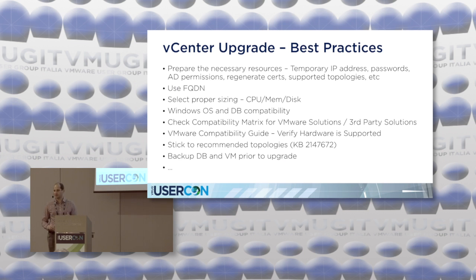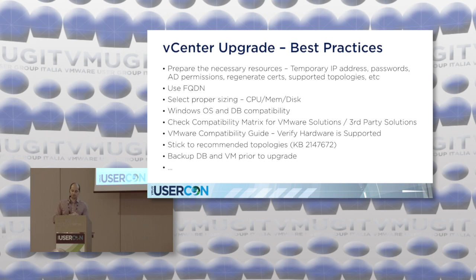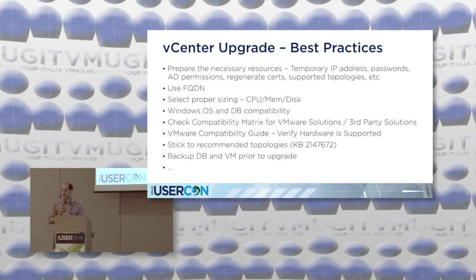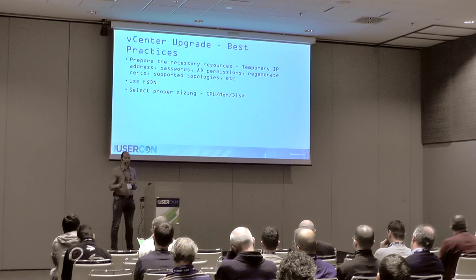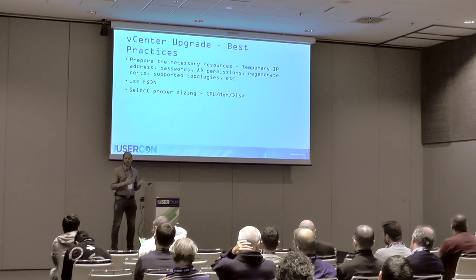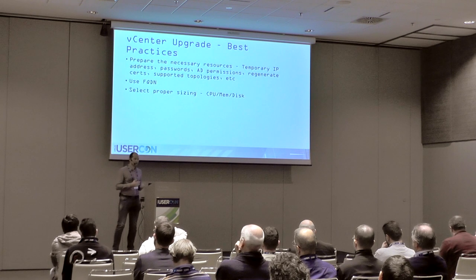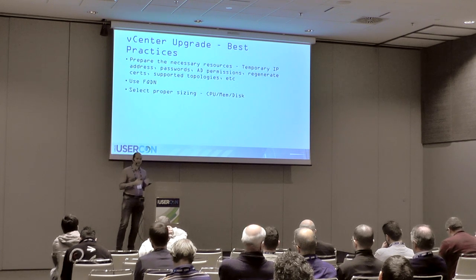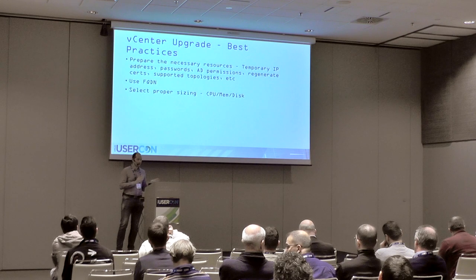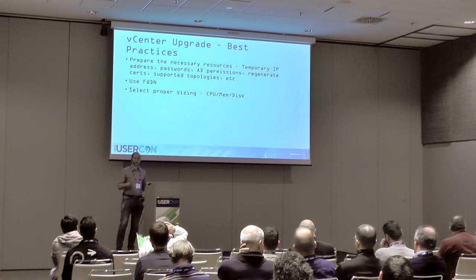Use FQDNs instead of IP addresses wherever possible. Select proper sizing — as part of deploying the target vCSA, it uses CPU, memory, and disk. Check VMware sizing recommendations before the upgrade to know which vCSA size fits your use case. Also check Windows OS and database compatibility upfront.